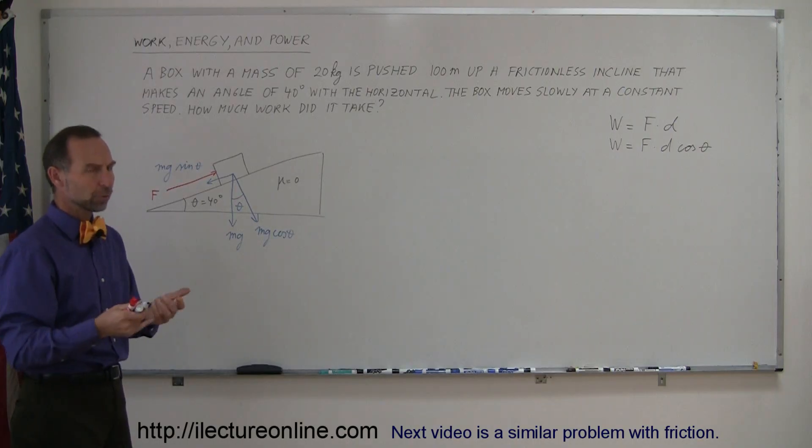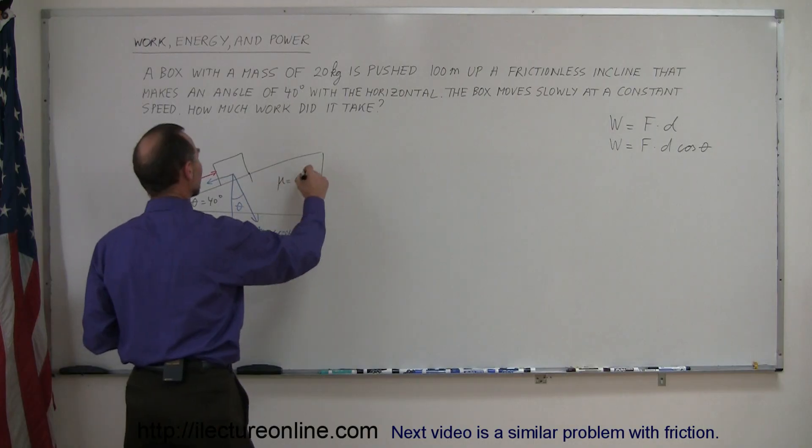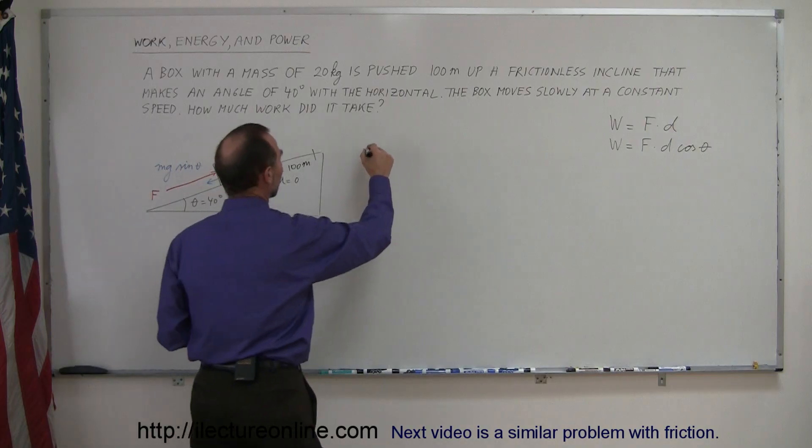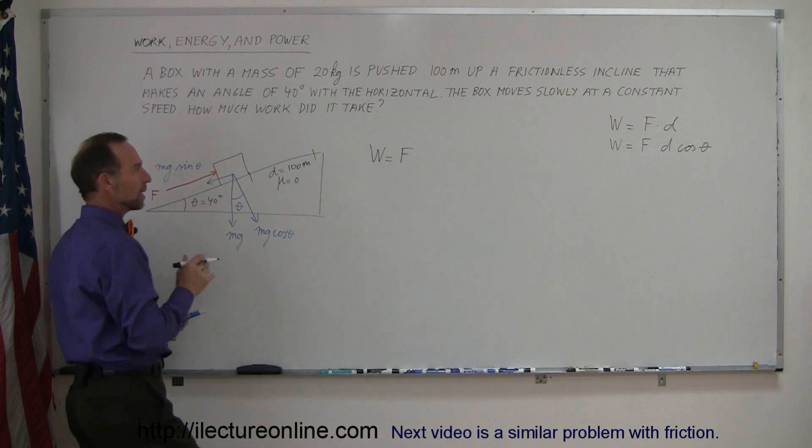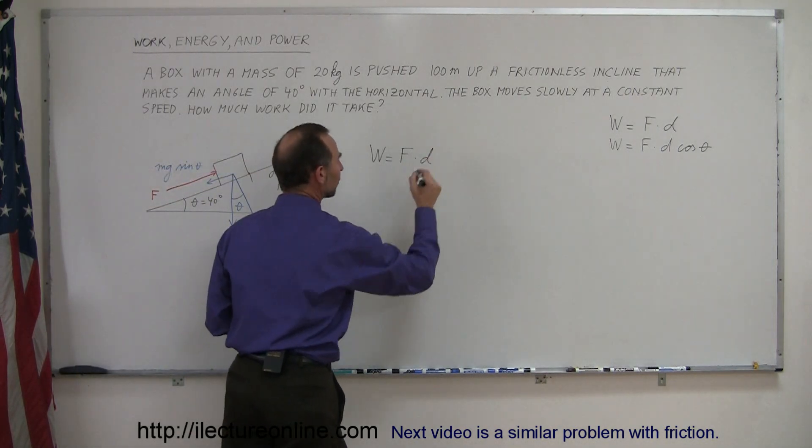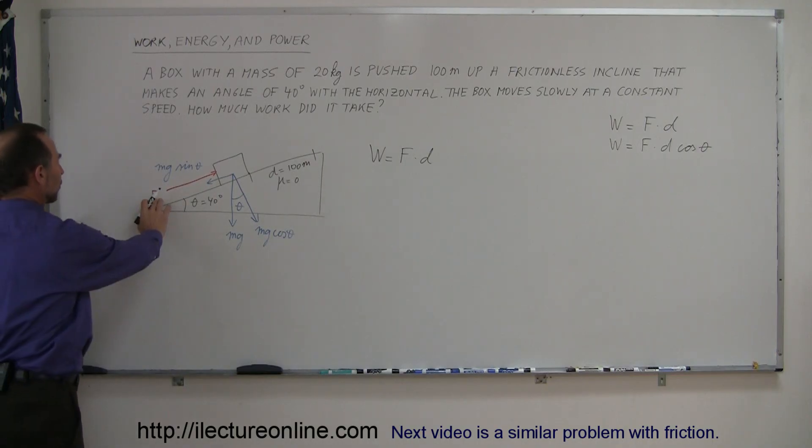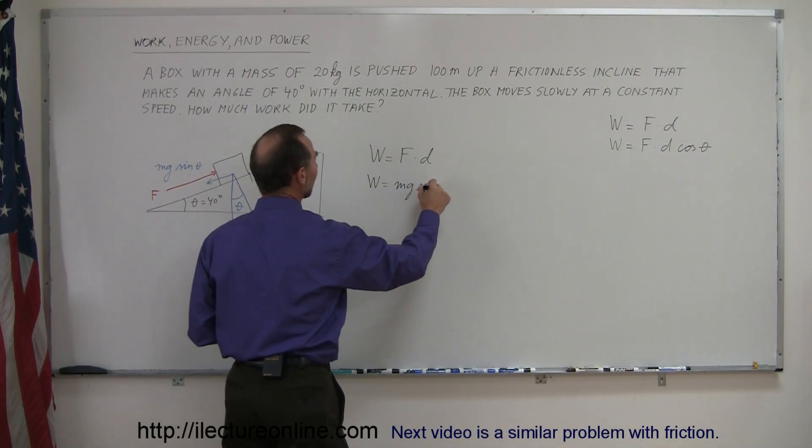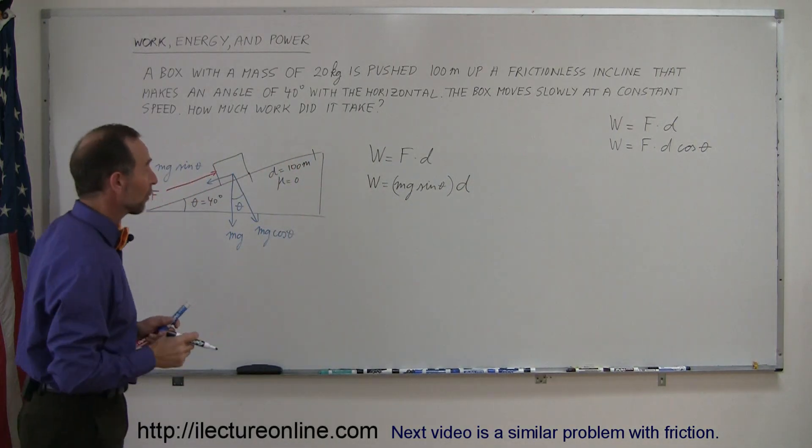Now the question is how much work is done. If the distance covered on the incline is 100 meters, then we could say the work done equals the force required to push the box upward at a constant speed times the displacement of the box. The force must equal mg sin θ. So the work is equal to mg sin θ times the distance. Now we're ready to plug in the numbers.